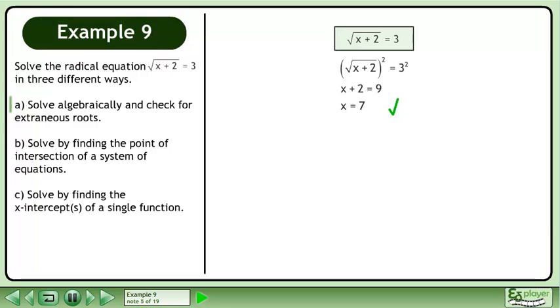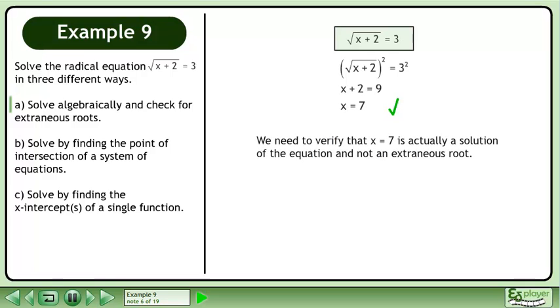Subtract 2 from each side of the equation to get x equals 7. We need to verify that x equals 7 is actually a solution of the equation and not an extraneous root.